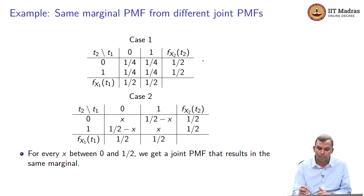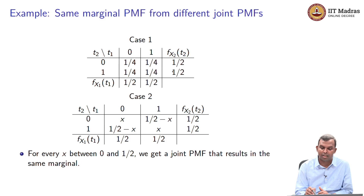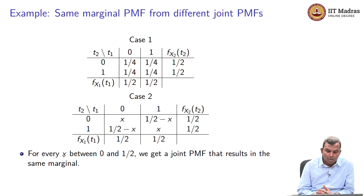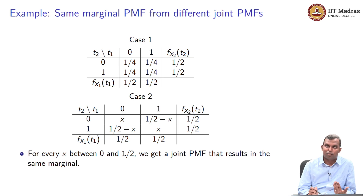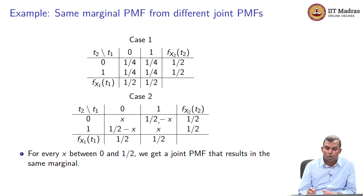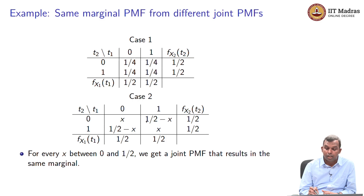I have shown here case 1 and case 2. In case 1, you see the 1/4, 1/4, 1/4, 1/4 distribution gives marginals of 1/2, 1/2, 1/2, 1/2. In case 2, the joint PMF is something else — I put a variable x between 0 and 1/2. Take it as 0.1, for example: you have 0.1, then 0.5 − 0.1 = 0.4, then 0.4, and 0.1. Clearly this joint PMF is different from case 1 (which was all 0.25), but if you compute the marginals, you still get 1/2, 1/2, 1/2, 1/2.